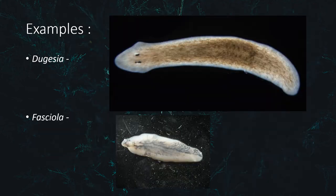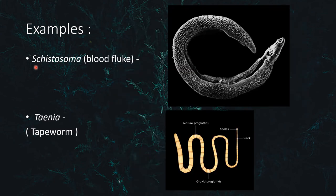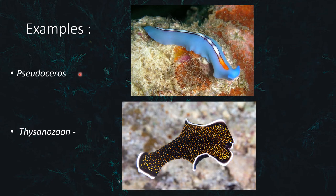Now let's see some examples of genera in this phylum. First we have Dugesia, which is a planarian; then we have Fasciola; Schistosoma, also called blood fluke; Taenia, or tapeworm; Pseudoceros; and Thysanozoon.